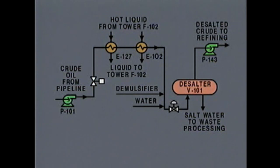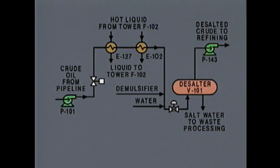This is a flow diagram of a crude oil desalter system. This system contains components that work together to remove salt and other impurities from crude oil. We'll use the diagram as we trace the flow path of the oil through the system.